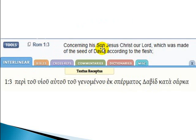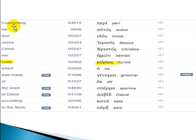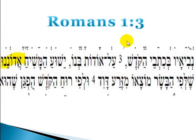Now when we go to Romans 1:3, it says, 'Concerning his son Yahashiah our Lord, which was made of the seed of David according to the flesh.' The word Lord here — when you read through the Hebrew and go to the breakdown of these words — in the Greek you have Kurios. That's correct, because it's speaking about Yahashiah. And when you go to Romans 1:3 in the Hebrew, they have the right and correct word for Lord.